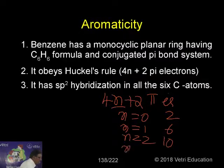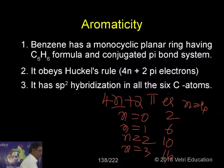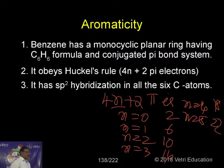n=2, 10. n=3, 14. n=4, 18. n=5, 22. One interesting information I just want to record here: beyond 22 pi electrons, even though it obeys Huckel's rule, the compound will not be aromatic because the planarity goes. Only if the molecule is planar, conjugation is possible. This is another characteristic.